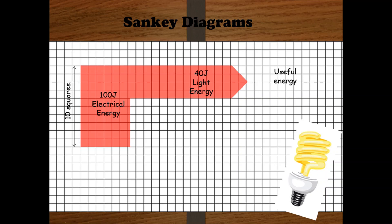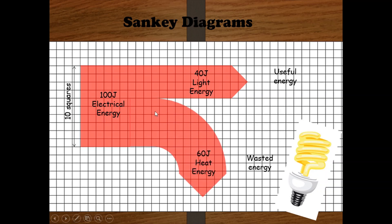The remaining 6 squares represent heat energy. One important point: the next conversion — the wasted energy — starts from where the light energy ends. Also, the width of each arrow must remain the same throughout. If it is 6 squares wide, it stays 6 squares wide; if it is 4 squares wide, it stays 4 squares. That's the first diagram.